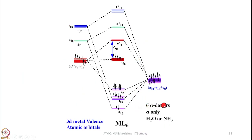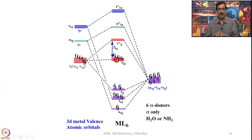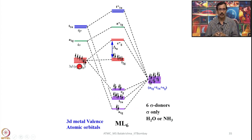Once again, 6 sigma donor ligands such as water or ammonia come with 12 electrons. These are the symmetries of the ligand group orbitals that are going to combine with metal orbitals. I have put 6 electrons in the d orbital; these 6 electrons remain here as non-bonding, and if there is any electronic transition, these electrons can be promoted to this higher energy state. This represents a typical hexaammine or hexa-aqua metal complex, where you can put whatever electrons the metal possesses after the required oxidation state is achieved.